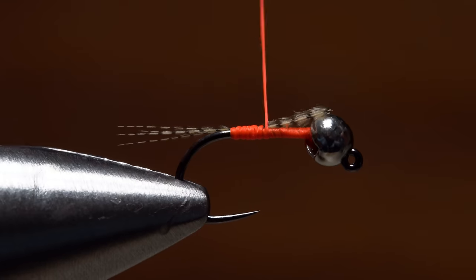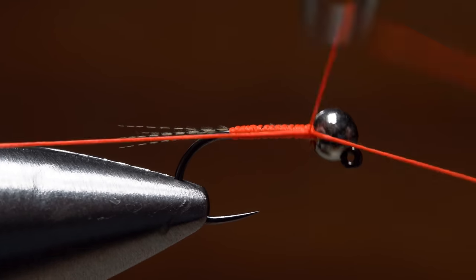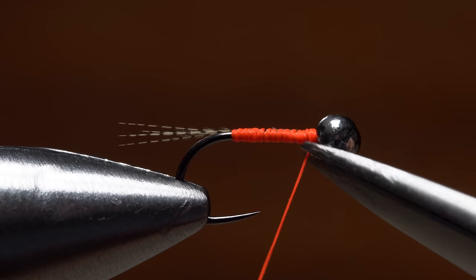Now wrap forward all the way up to the back edge of the bead. There complete a three or four turn whip finish, seat the knot well, and snip your tying thread free.